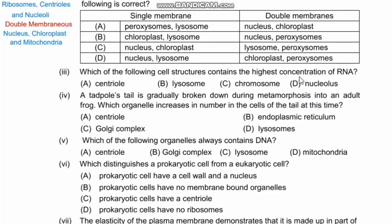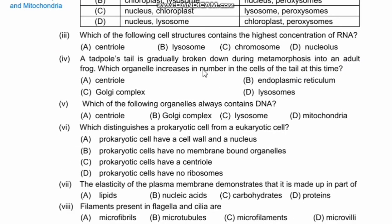Question 4: A tadpole's tail is gradually broken down during metamorphosis into an adult frog. Which organelle increases in number in the cells of the tail at this time? Options are centriole, endoplasmic reticulum, Golgi complex, and lysosomes. Lysosomes have a function called autolysis — during development, to destroy unnecessary cells, lysosomes release enzymes. This process is called autolysis. So our right option is D.